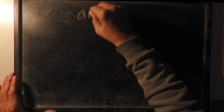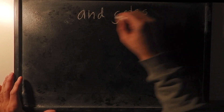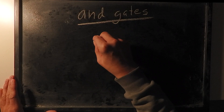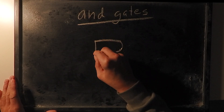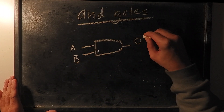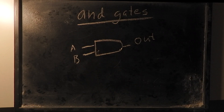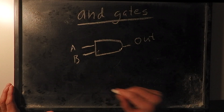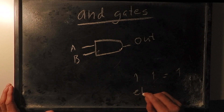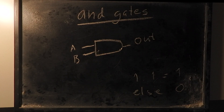Welcome to today's show. We're going to talk about AND gates. The symbol for an AND gate in an electronic sketch has two inputs, A and B, and one output. The inputs are either zero or one, and if both A and B are one, then the result is one — otherwise zero.